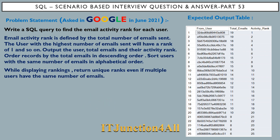Now let's come to the problem statement. This problem has been asked in Google in June 2021. It says: write a SQL query to find the email activity rank for each user. The email activity rank is defined by the total number of emails sent — the user with the highest number of emails sent will have a rank of 1, and so on.